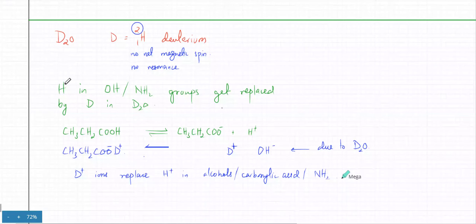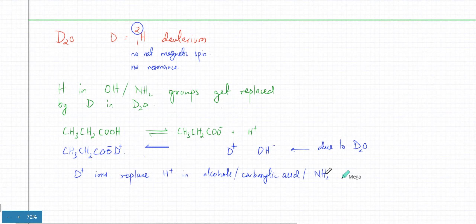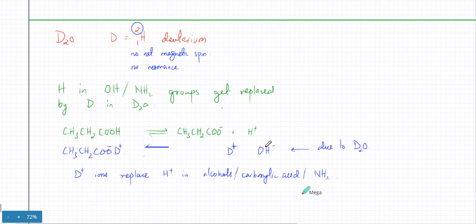Hydrogen atoms in OH or NH2 groups — whenever you have an OH group or NH2 group — they have a tendency to get ionized, as in carboxylic acids, alcohols, and amines. If they're getting ionized, and the water contains D+ and OD- ions, not OH-, then this must be OD- ions.